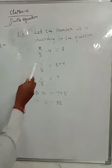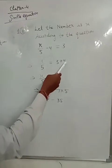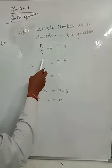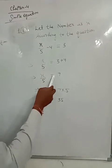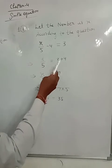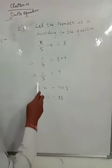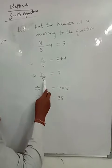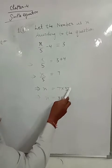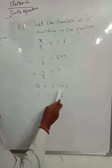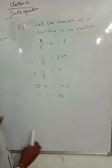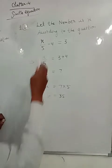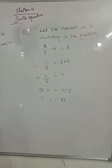Let's solve this. If we have minus 4, we transpose it to plus 4. So x upon 5 is equal to 3 plus 4, which is 7. Then x is equal to 5 into 7, which is 35. So our number is 35.